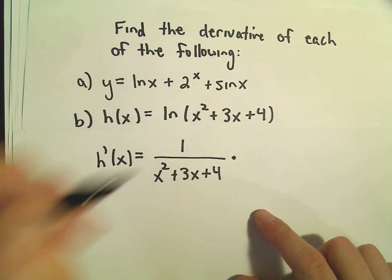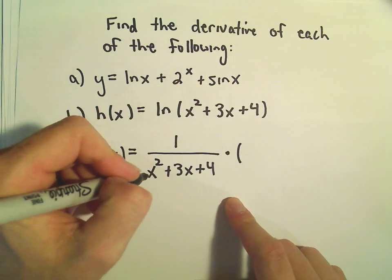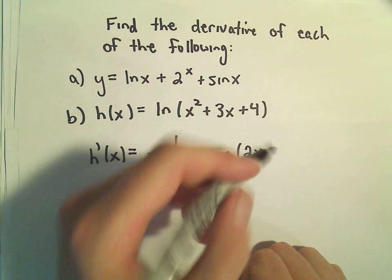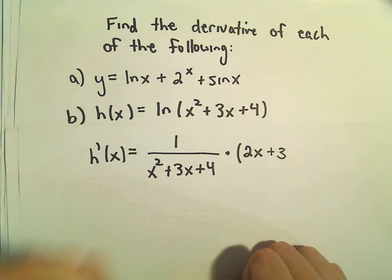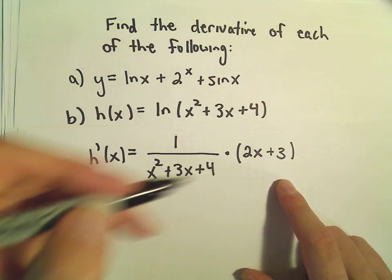And then we'll do the chain rule, so when we take the derivative of the inside part, the derivative of x squared will get 2x, the derivative of positive 3x will just give us positive 3, and then the derivative of our constant positive 4 is just 0.